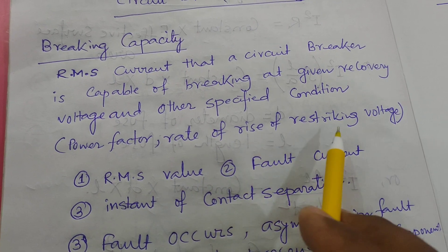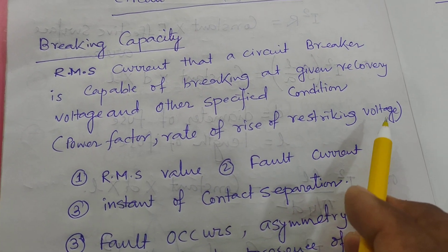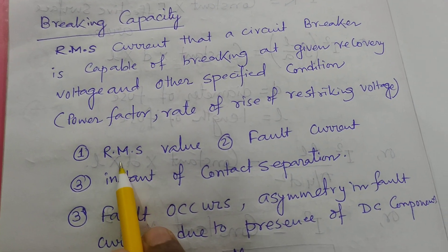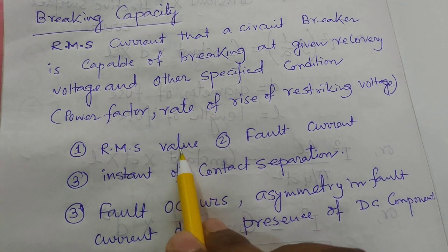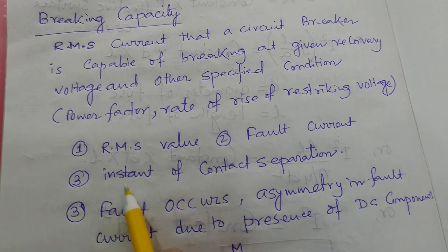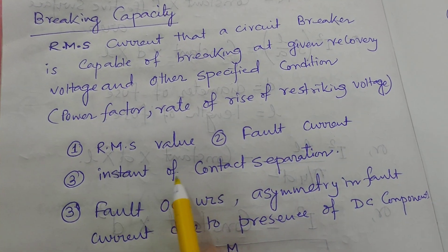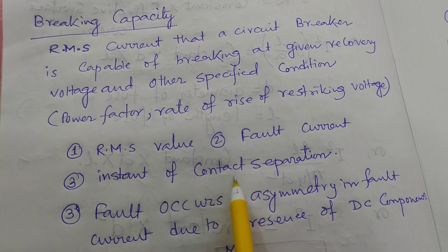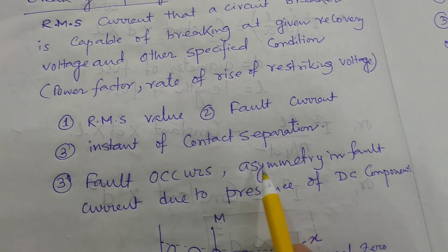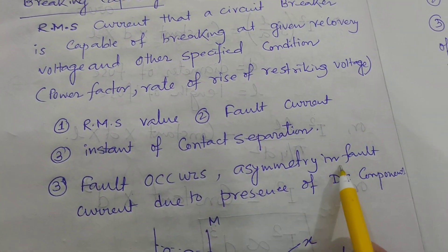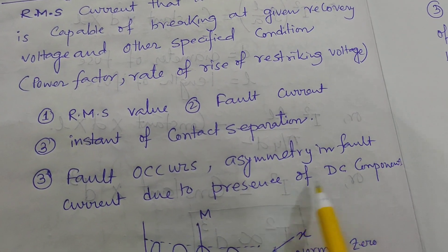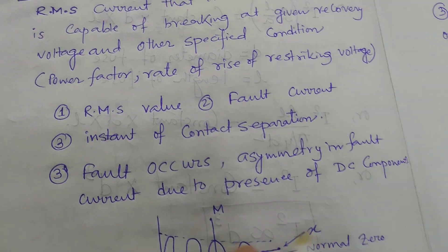Other specified conditions include rate of rise of striking voltage, etc. It is the RMS value of the fault current at the instant of contact separation when a fault occurs, including asymmetry in the fault current due to the presence of the DC component.